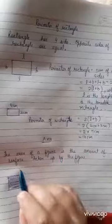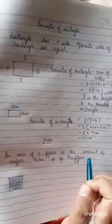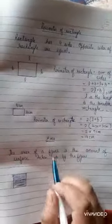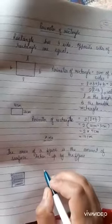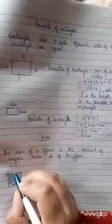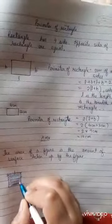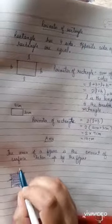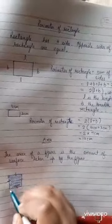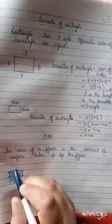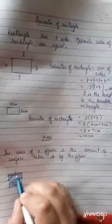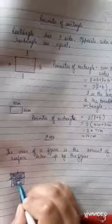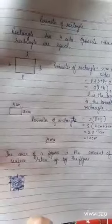The area of the figure is the amount of surface taken up by the figure. The difference between the perimeter and this area is perimeter is sum of all the sides means distance around the figure. But area is space taken up by the figure.